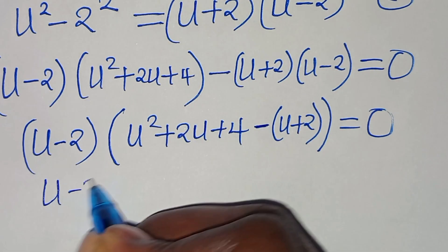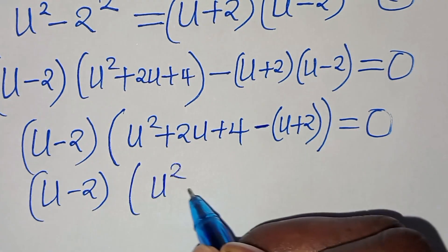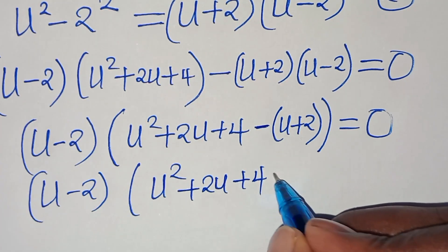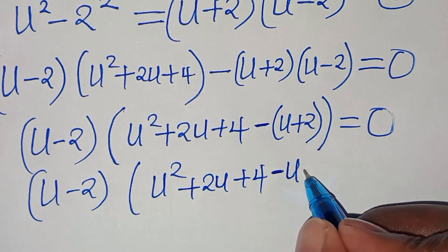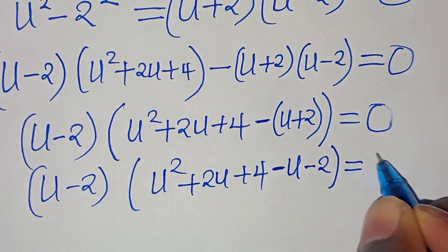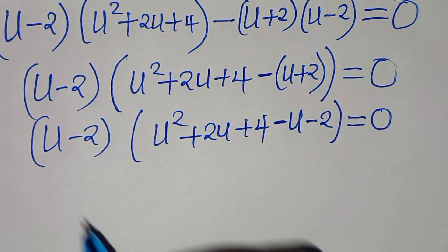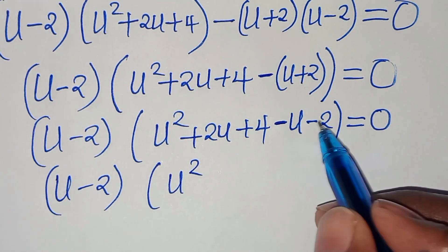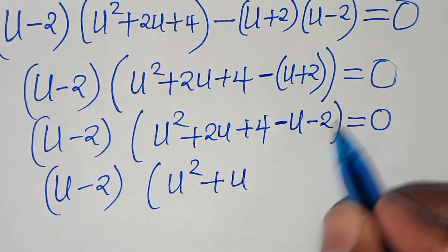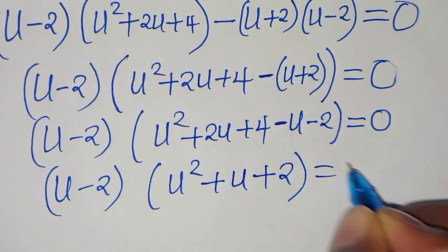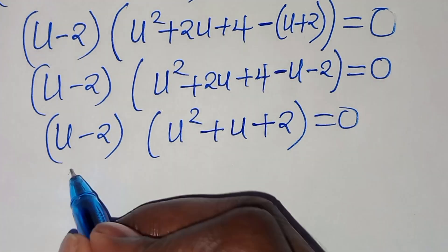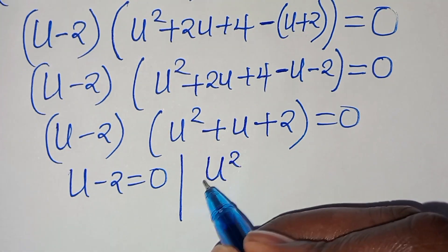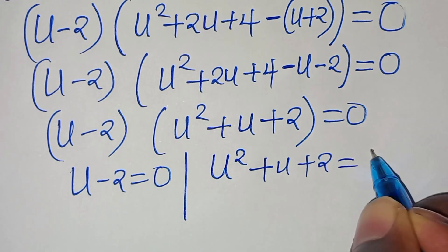Now, factoring out u minus 2, we simplify the bracket. We have 4 minus 2, which is plus 2. This is equal to 0. So we have two parts: the first part is u minus 2, and the second part is a quadratic equation, that is u squared plus u plus 2, this is equal to 0.